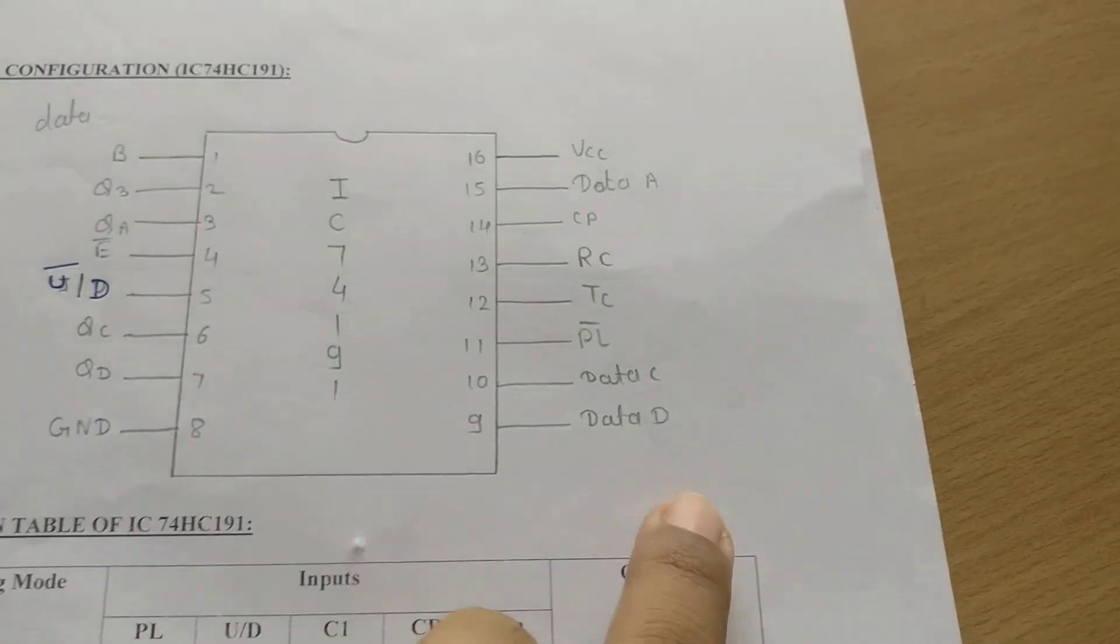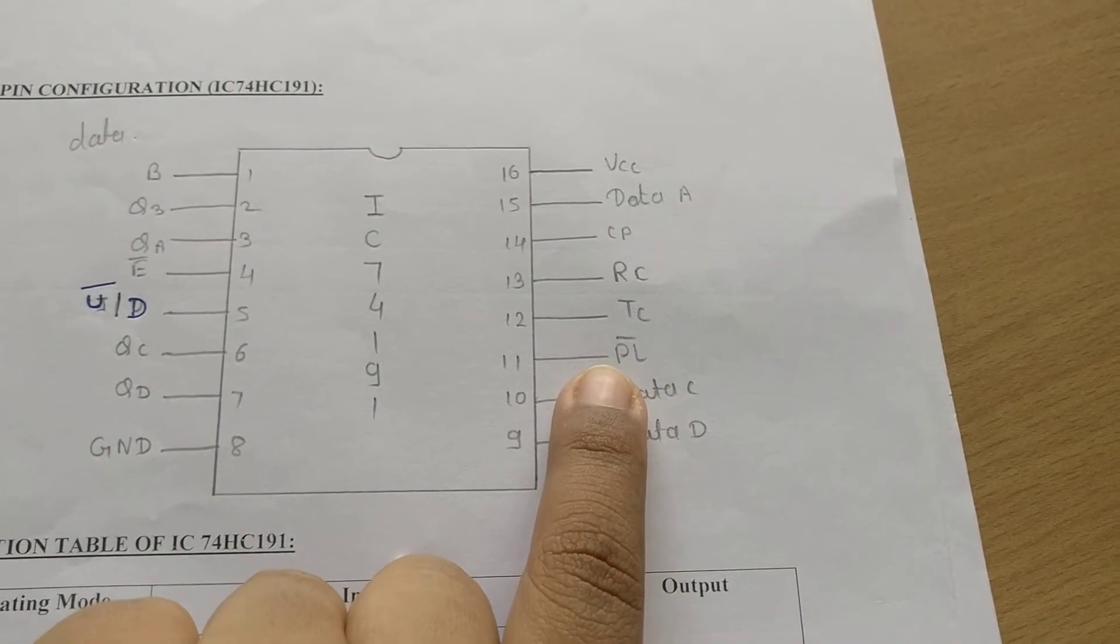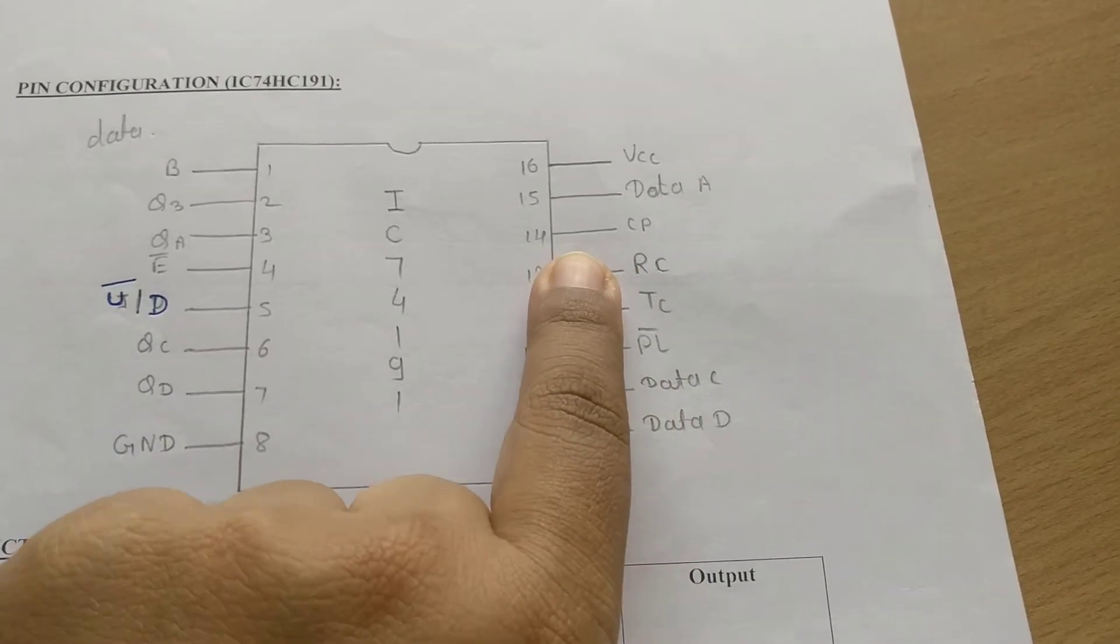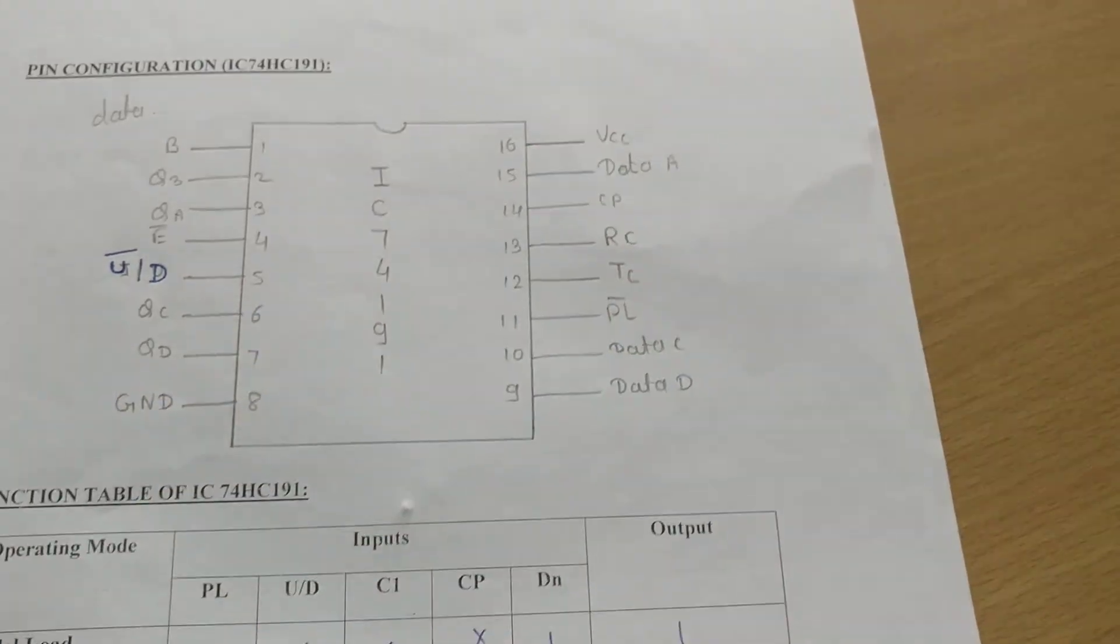Pin number 8 is ground, pin number 11 is parallel load bar. Pin number 12 and 13 are no connection. Pin number 14 is clock pulse, pin number 16 is VCC.